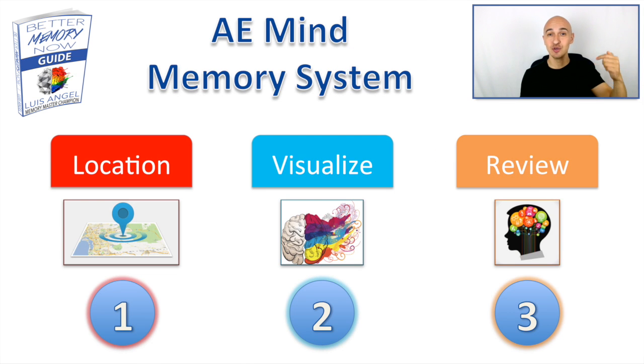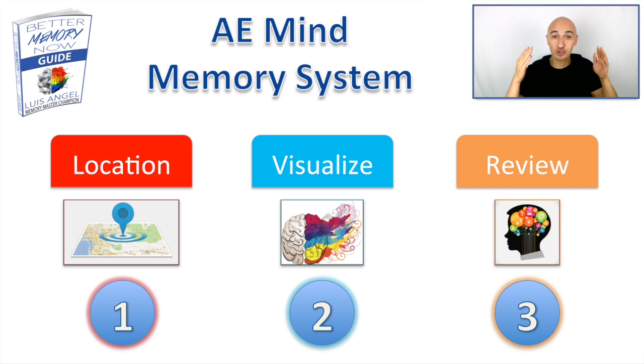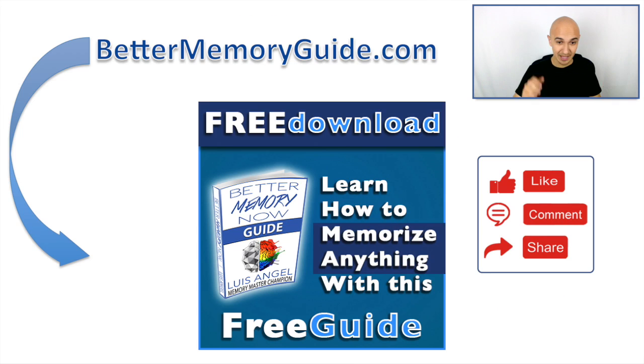Three simple steps that we all use: one, we need a location to store information. Two, we need to visualize that information on the location. And three, we need to review in order to remember it for a longer period of time.